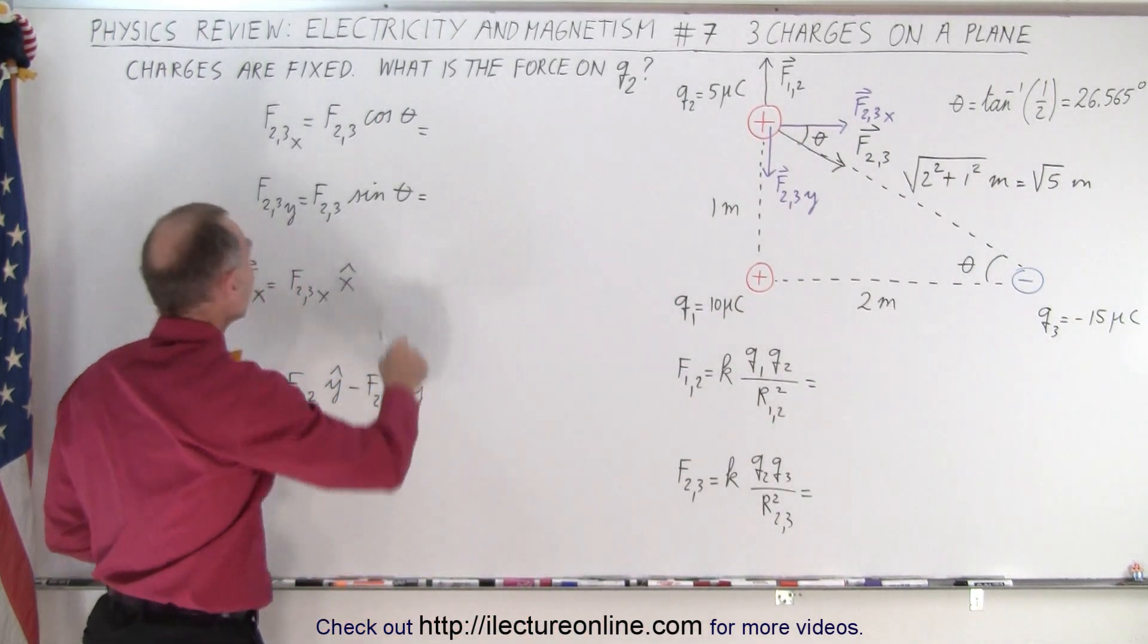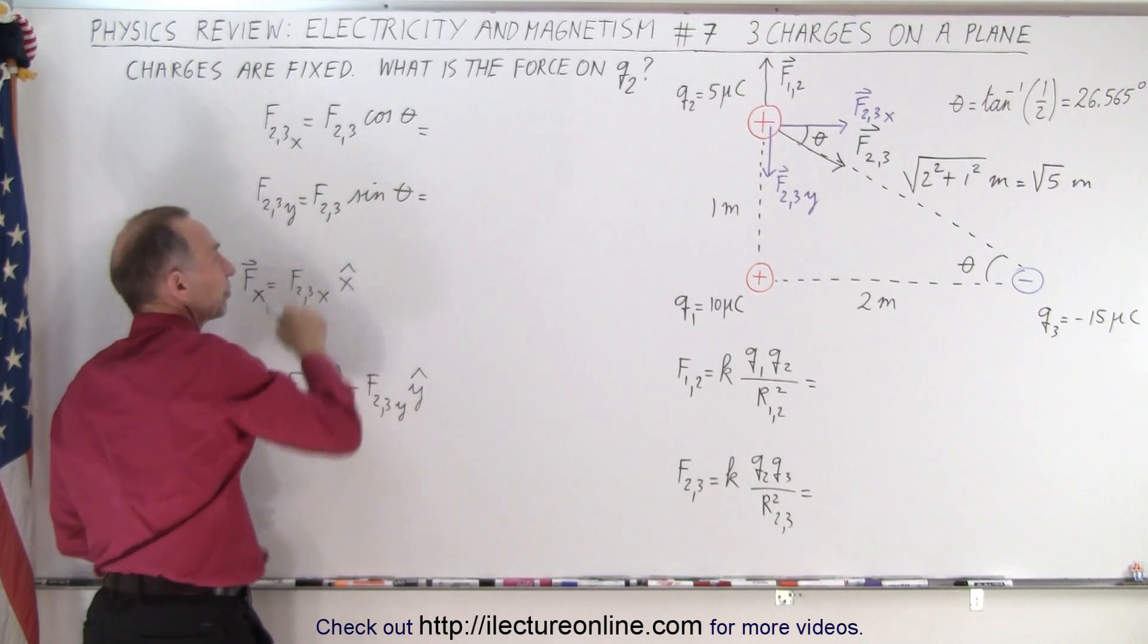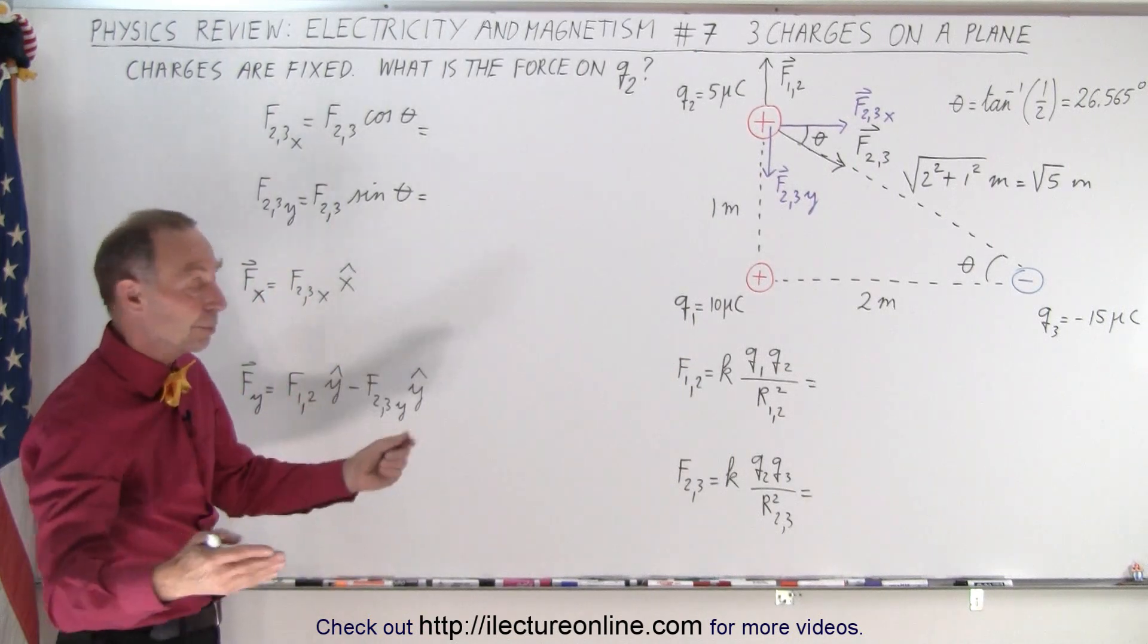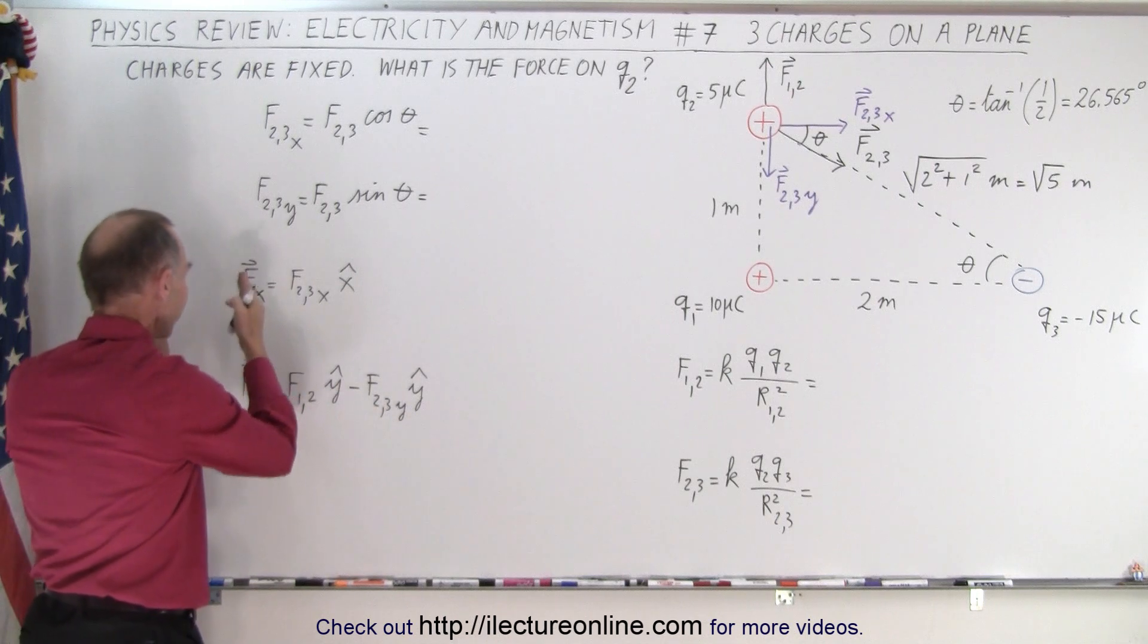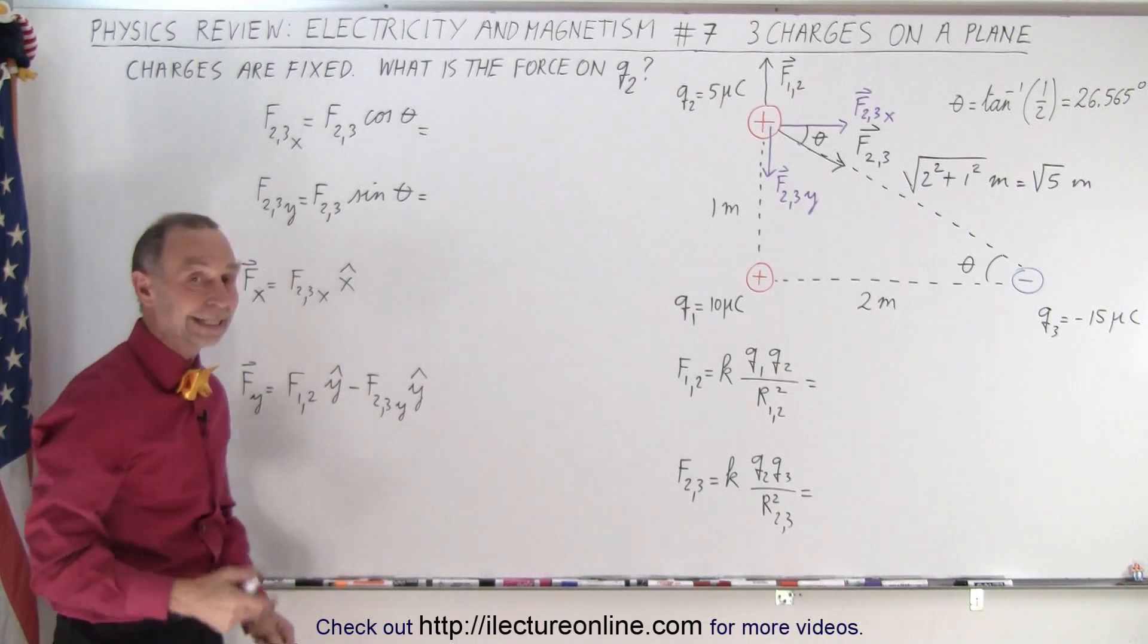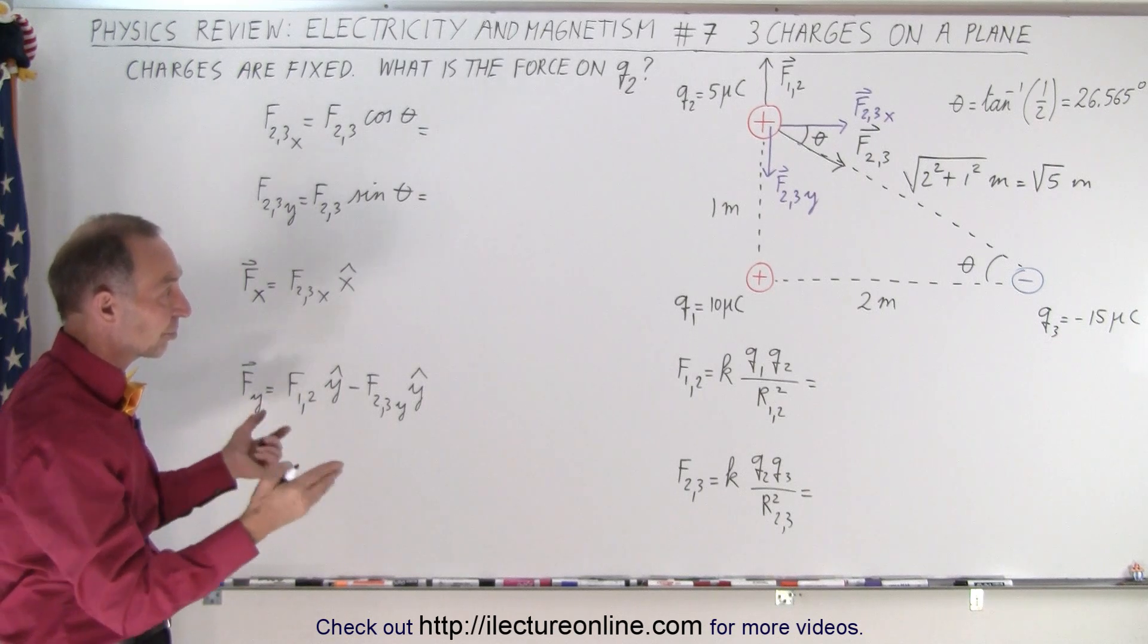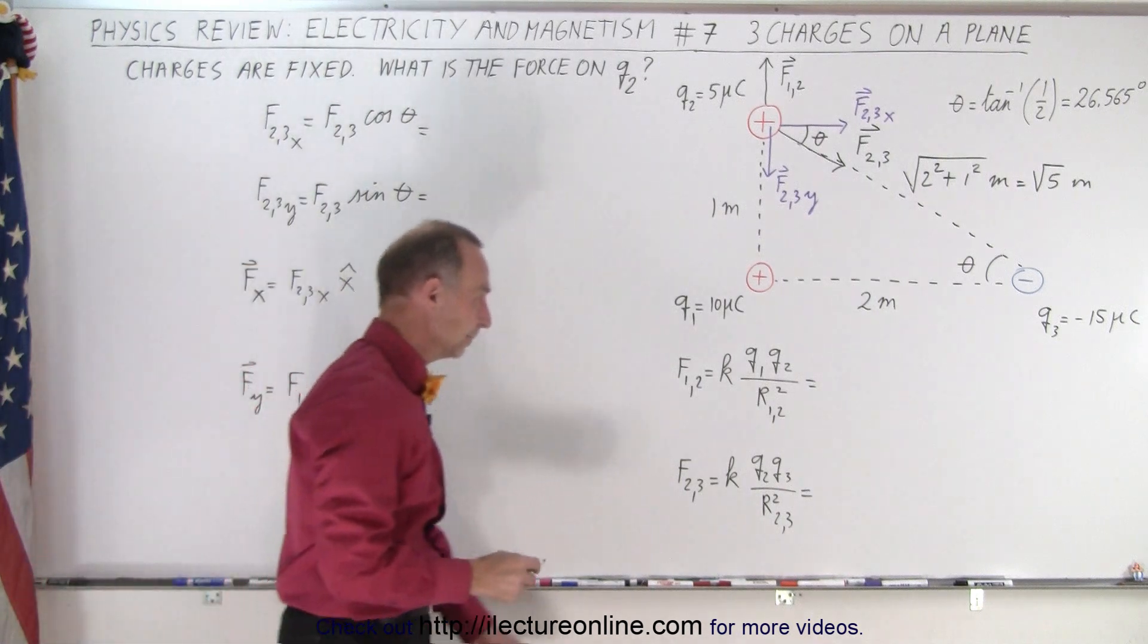Once you have those values, you then use the cosine of the angle and the sine of the angle to find the X to Y components of F23, the force between 2 and 3, and then now we have all the components, so now we simply have to add all the X components and all the Y components to find the final vector in the X to Y direction, then we simply combine the two. All right, so that is the strategy, now all we have to do is plug in the numbers and crank the calculator.